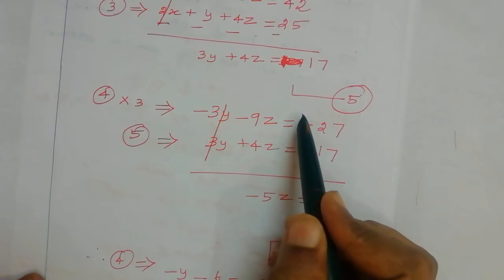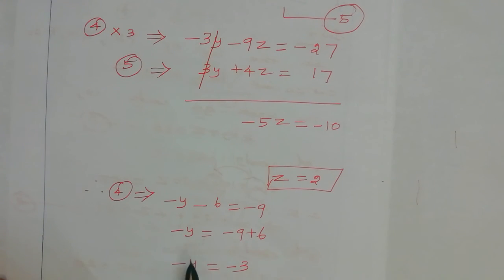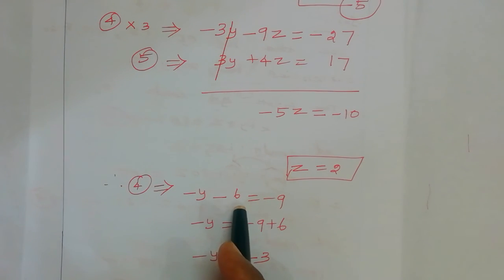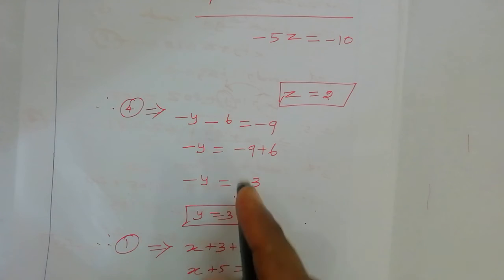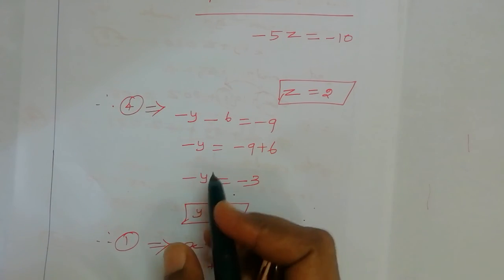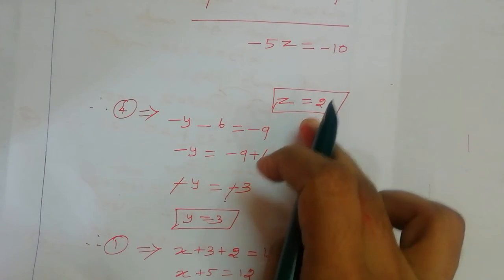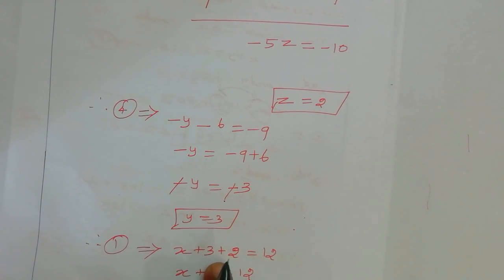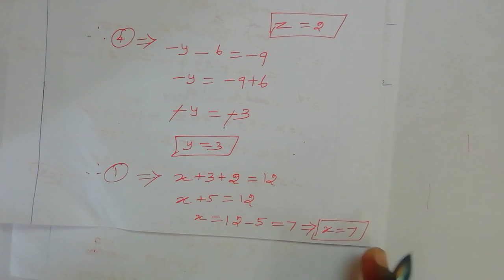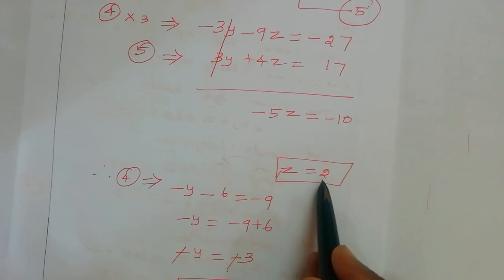Substituting z equal to 2 into equation 4: minus y minus 6 equal to minus 9, so minus y equal to minus 9 plus 6 equal to minus 3, therefore y equal to 3. Substituting y equal to 3 and z equal to 2 into equation 1: x plus 3 plus 2 equal to 12, so x equal to 12 minus 5, therefore x equal to 7. Therefore, number of 5 rupee notes is 7, number of 10 rupee notes is 3, and number of 20 rupee notes is 2.